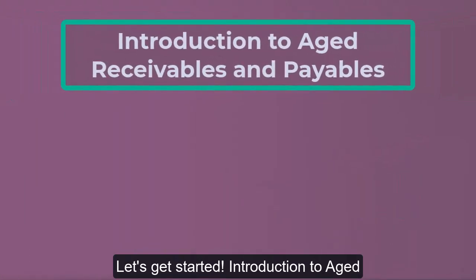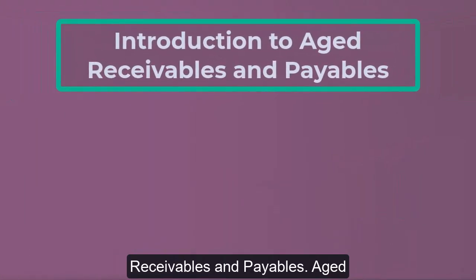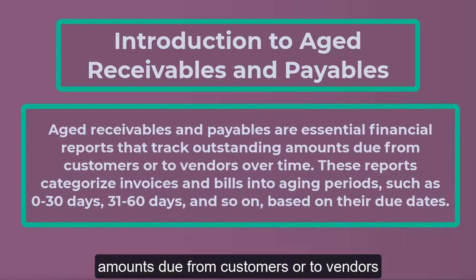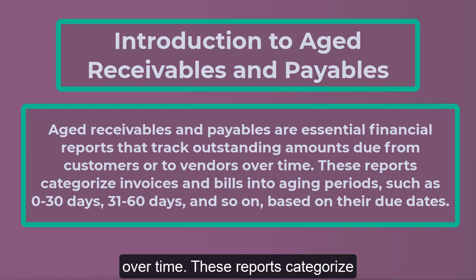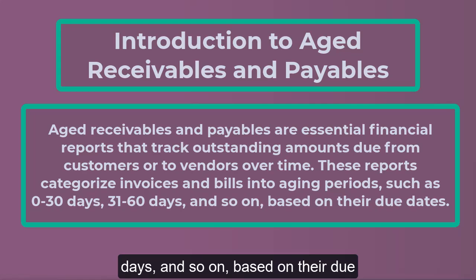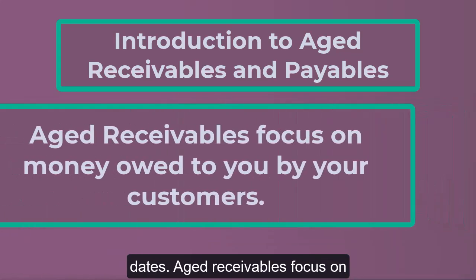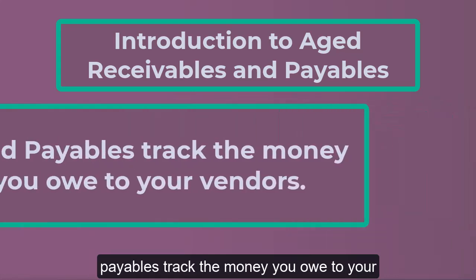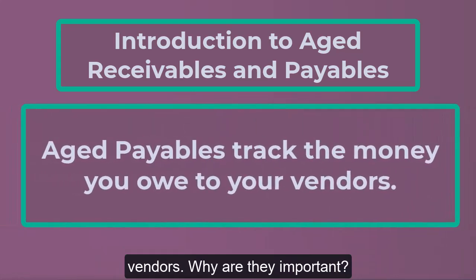Aged Receivables and Payables are essential financial reports that track outstanding amounts due from customers or to vendors over time. These reports categorize invoices and bills into aging periods, such as 0 to 30 days, 31 to 60 days, and so on, based on their due dates. Aged Receivables focus on money owed to you by your customers, while Aged Payables track the money you owe to your vendors.